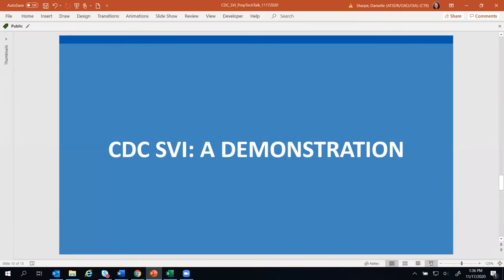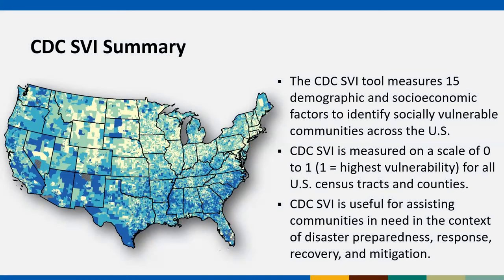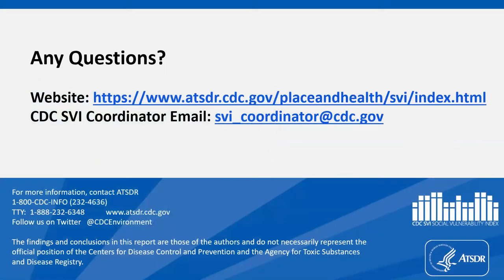To wrap up: our CDC SVI tool measures 15 different social factors that capture the concept of social vulnerability, helping a variety of partners across the U.S. identify their most socially vulnerable communities. This tool measures social vulnerability on a scale of zero to one, with one being most vulnerable, for census tracts and counties across the U.S. CDC SVI is useful for assisting communities in the context of disaster preparedness, response, recovery, and mitigation — across the entire disaster cycle. I'm happy to take questions once all presenters have gone.